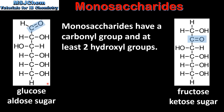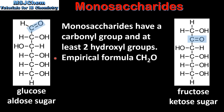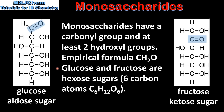As you can see from their structures, both glucose and fructose contain 5 hydroxyl groups which makes them soluble in water. Monosaccharides have the empirical formula of CH₂O. Glucose and fructose are hexose sugars which means they have 6 carbon atoms. The molecular formula is C₆H₁₂O₆.